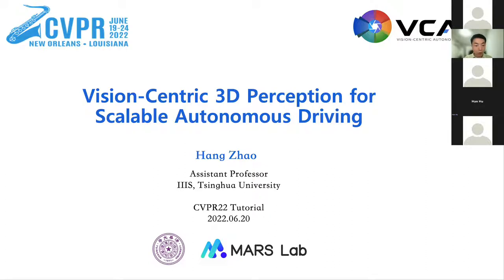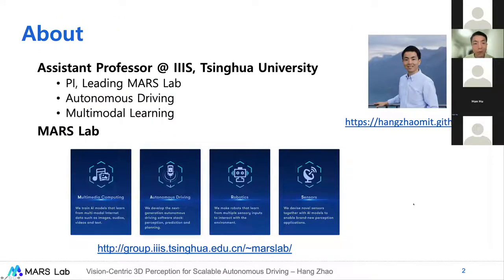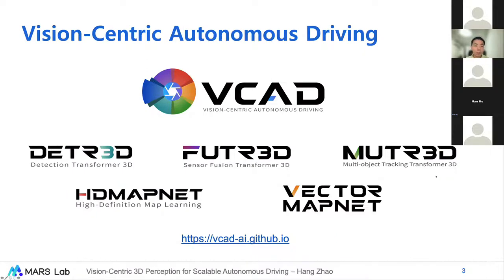I'm very honored to be here to present remotely to everyone, and hopefully next year we have a chance to meet in person. I'm an assistant professor at Tsinghua University, leading a group called Mars Lab. Our Mars Lab is not limited to working on autonomous driving problems — we also work on a series of interesting and challenging AI problems like multimodal learning, robotics, novel sensors, and more. In the past two years, we have been actively working on the topic we call Vision-Centric Autonomous Driving, VCAT, and we have published a series of papers on this topic.